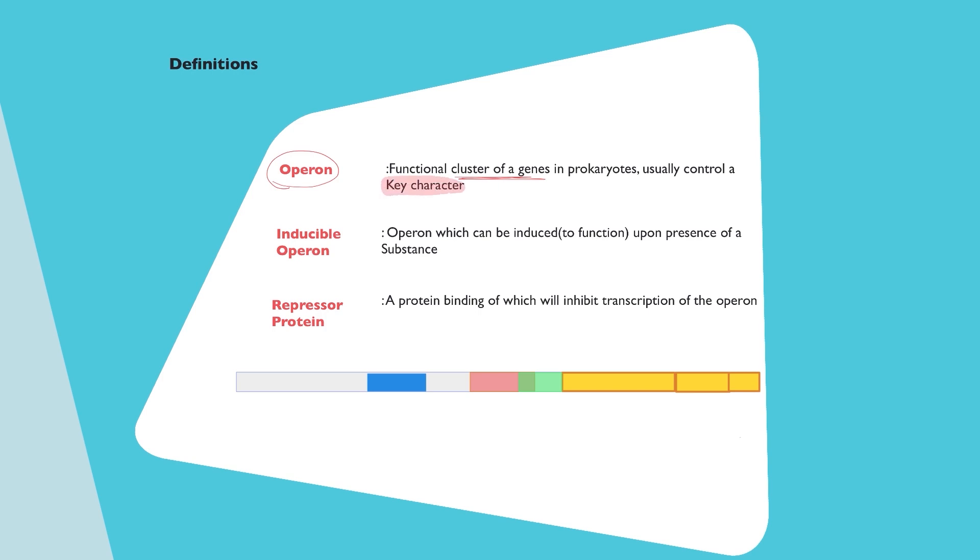For example, the lac operon controls the breakdown of lactose. Now you very well know that lactose is a disaccharide which is made up of glucose and galactose.